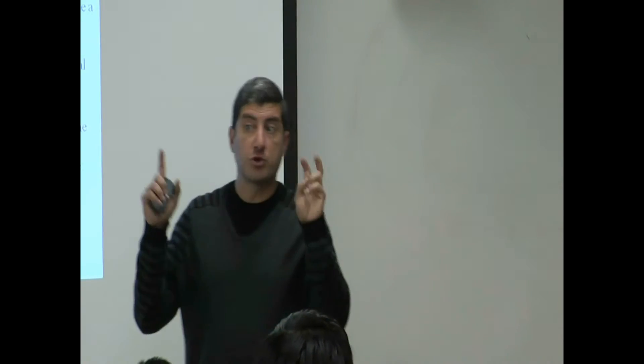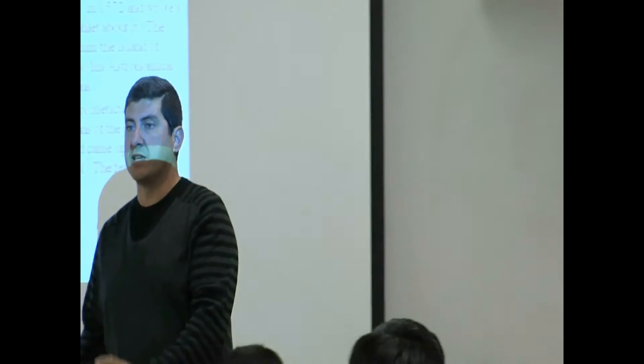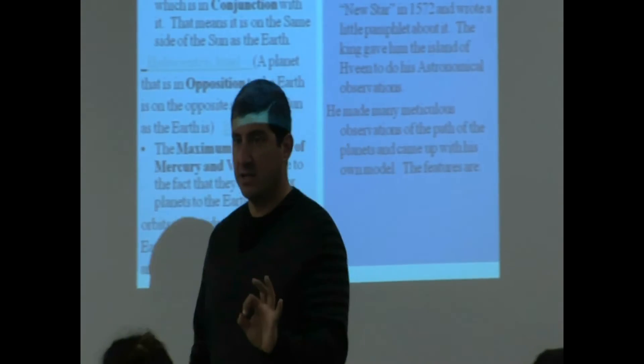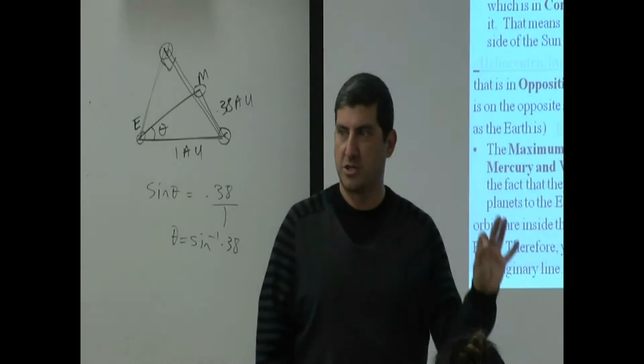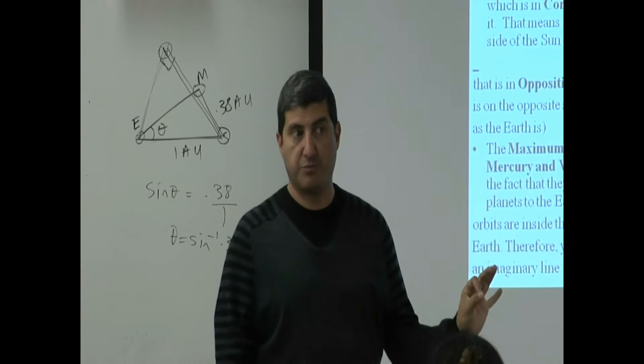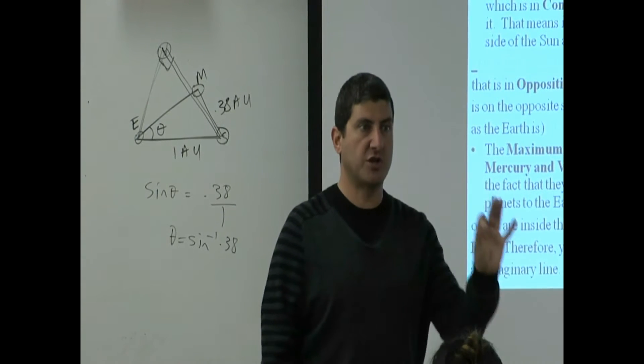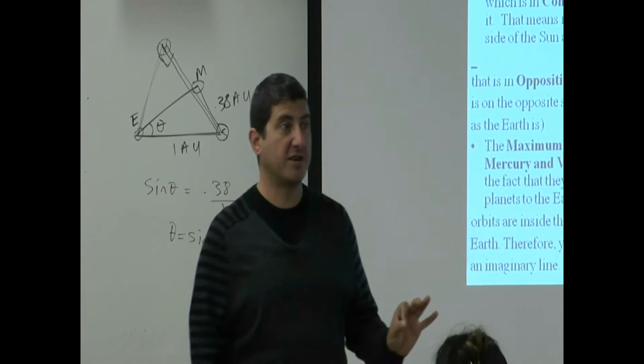So according to Copernicus, the heliocentric model can predict best where the planets ought to be from month to month. Ptolemy thinks his model can predict the path and location of planets, but he's actually wrong. He was weak.